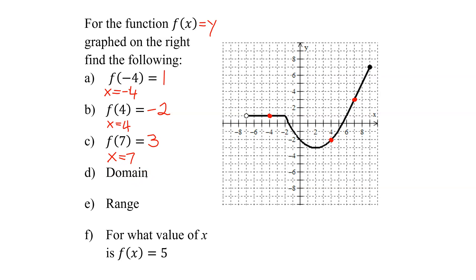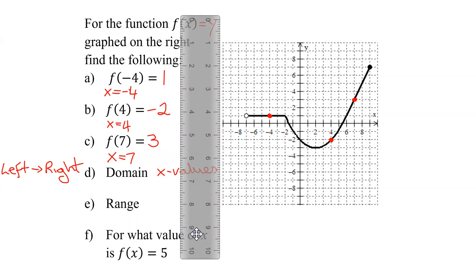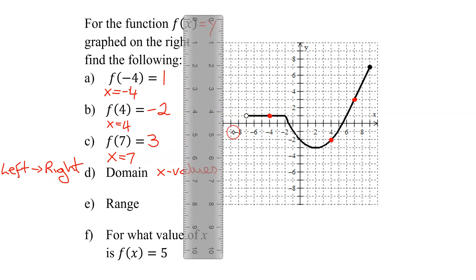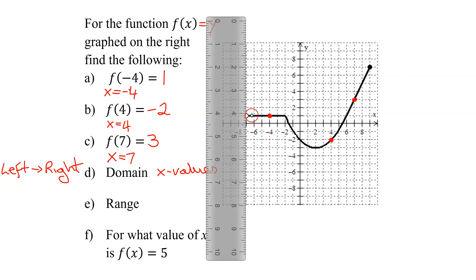Now we need to find the domain. Remember, the domain comes from the x values of the points on the graph, and we always read the domain going from left to right. I like to take a straight edge and bring it in from the left. When I first get to my graph, is there a graph right here? No, there are no points on the graph. I move along, and this is the first point I get to. What's its x value? Halfway between negative 6 and negative 8, so it is negative 7. Is there a point when x equals negative 7? No, it's an open circle — I do not include it, which means I have to use a parenthesis.